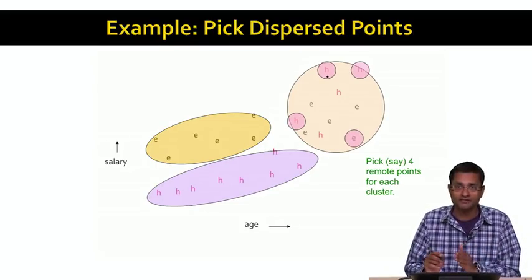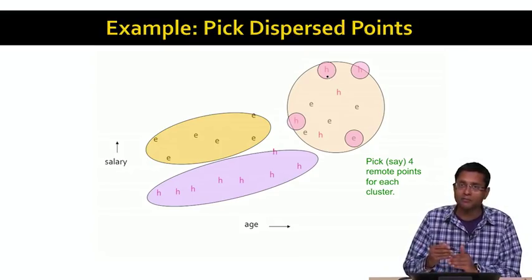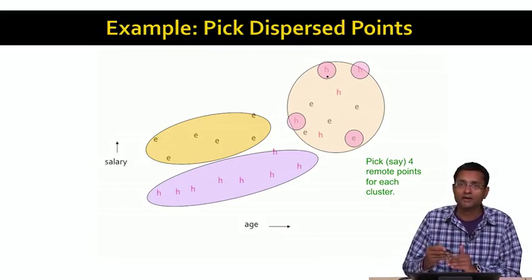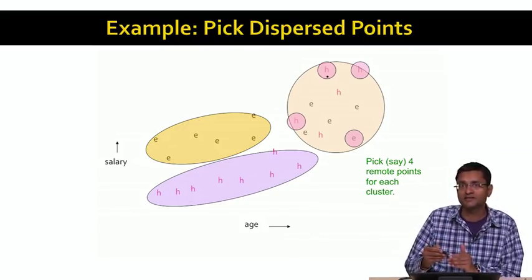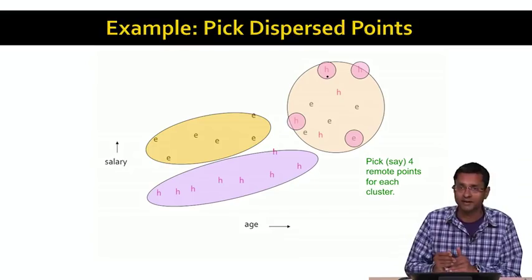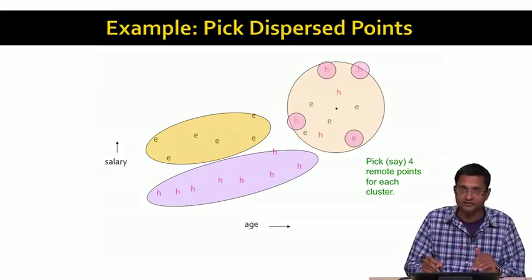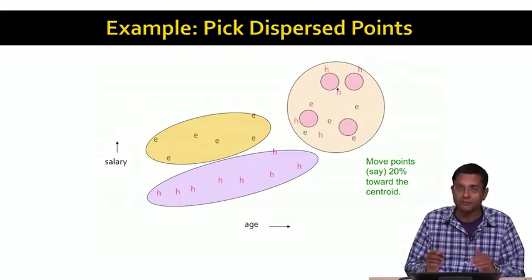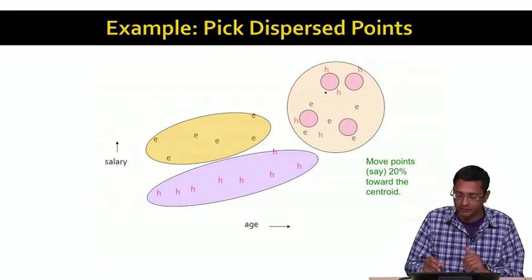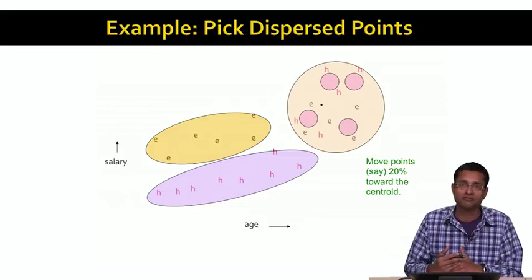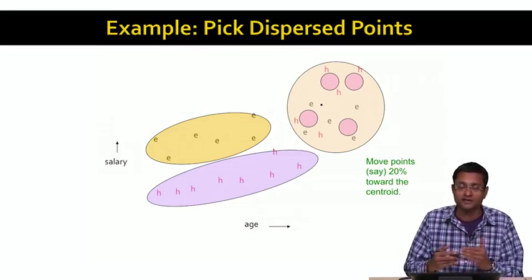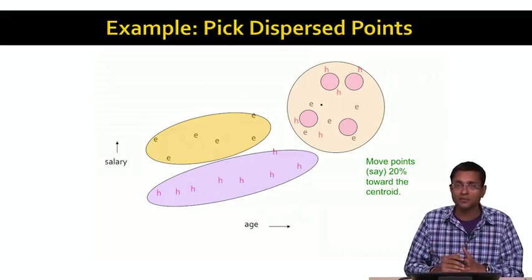Once we pick these four remote points for the cluster, we are going to move these points towards the centroid of the cluster. We are not actually going to affect the data itself, but will pick synthetic points that are closer to the centroid of the cluster than the remote points we've actually picked. The centroid of the cluster is somewhere in the middle. When you move the points 20% towards the centroid, we end up with these synthetic points — these manufactured points — which are going to be the representative points for this cluster. We repeat this process for the other clusters as well, so for each cluster we end up with k — in this case four — representative points.